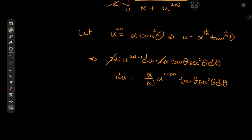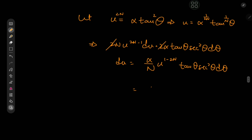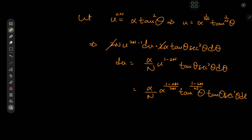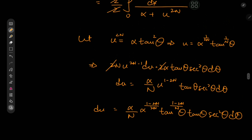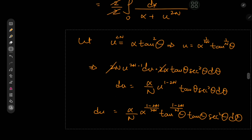So u to the 1−2n sorts out to alpha to the (1−2n)/(2n) times tan to the (1−2n)/n of θ. Combined with the tan θ and sec²θ dθ terms, that's our differential element. I'm going to zoom out a bit just to give myself some writing space.